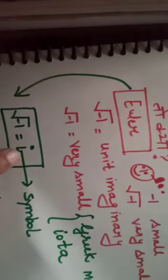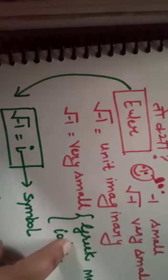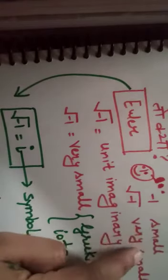Ko symbol diya i, ko bolte hai iota. Iota ka meaning hota hai very small. Ab complex number kya hai?